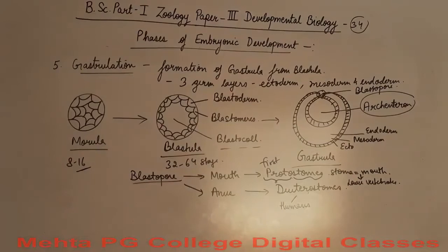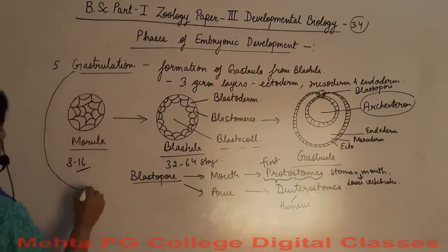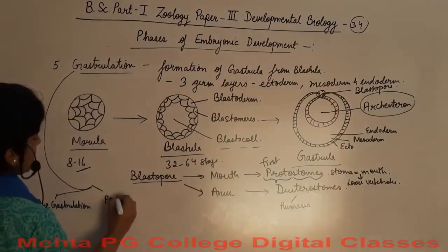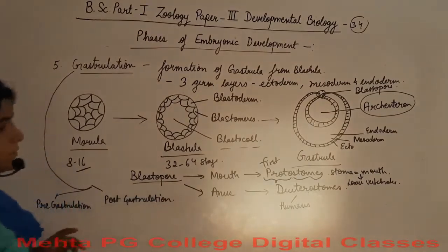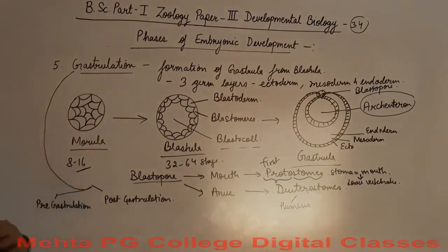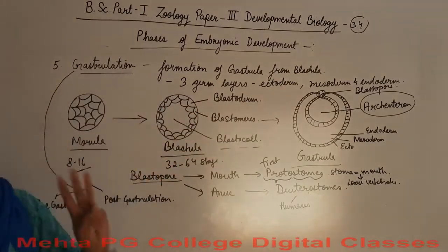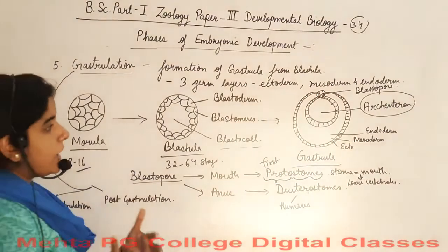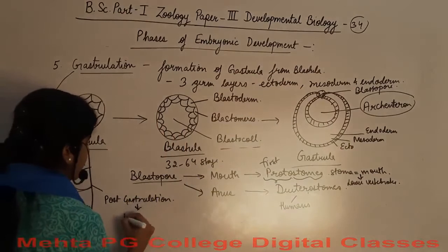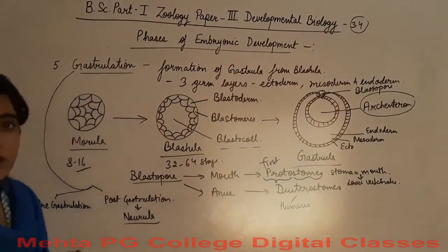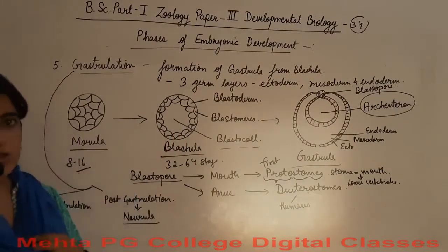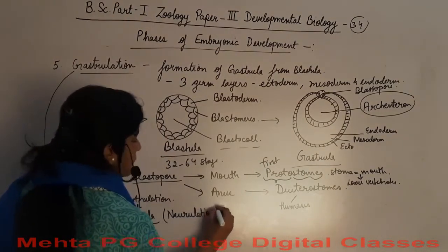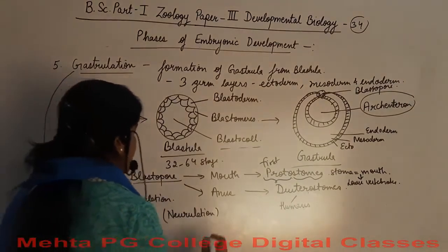Gastrulation is divided into pre-gastrulation and post-gastrulation. Pre-gastrulation is the phase in which blastula prepares itself to undergo gastrulation. After gastrulation, three germ layers are formed by gastrulation movements. In post-gastrulation, after the formation of gastrula, a new structure called neurula is formed. The process is called neurulation, and the structure formed is the neural plate.